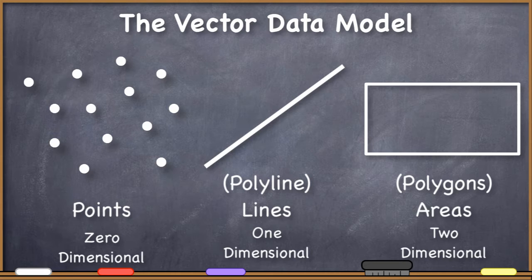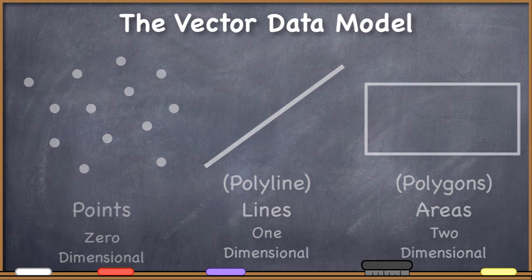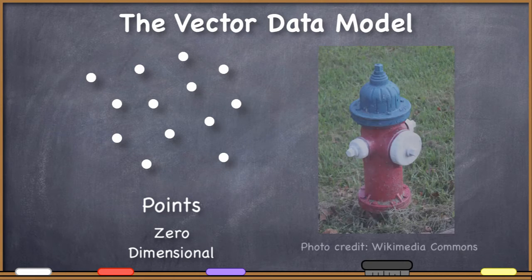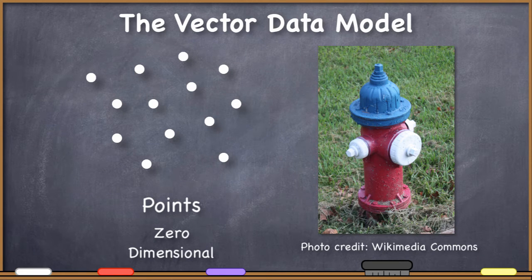Now we want to take a look at how we might use some of these to represent geographic features. Let's look at points first. What can we represent with points? One example is fire hydrants. If you're constructing a GIS dataset about a particular town, you might collect coordinates for every fire hydrant and have your GIS system put points at every coordinate location.